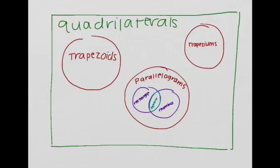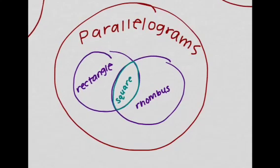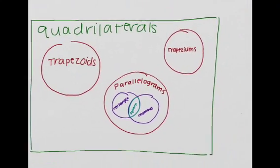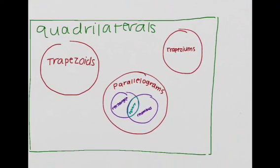It really helps to look at this Venn diagram. We have this big box of quadrilaterals with three sets: the trapezoid set, the trapezium set, and the parallelogram set. If we zoom in on the parallelogram set, there's the rectangle, there's the rhombus, and in the intersection between the rectangle and the rhombus, there's the square. Also, another popular figure you may know is the kite, and the kite would belong in the trapezium.